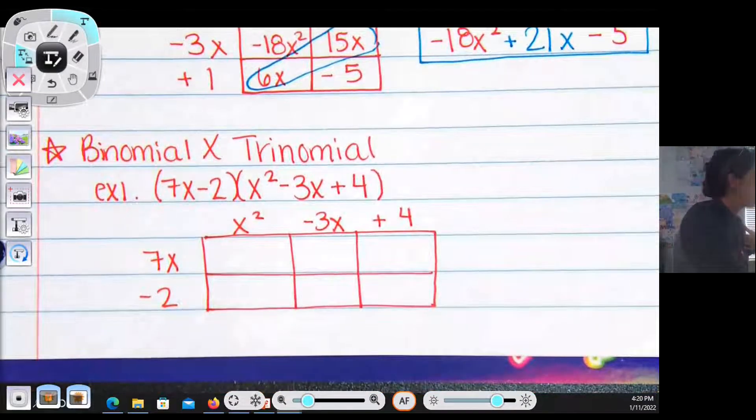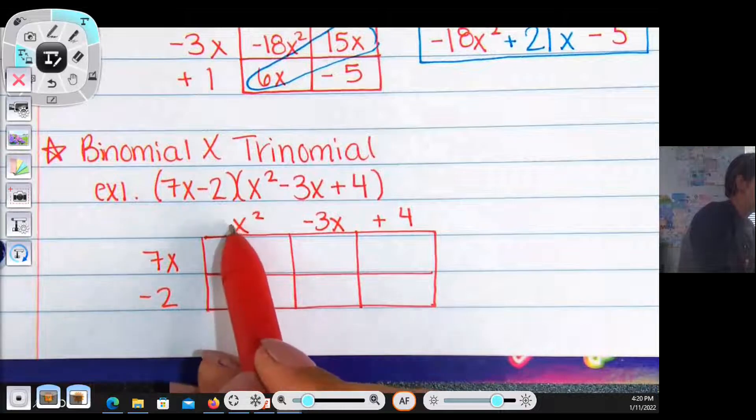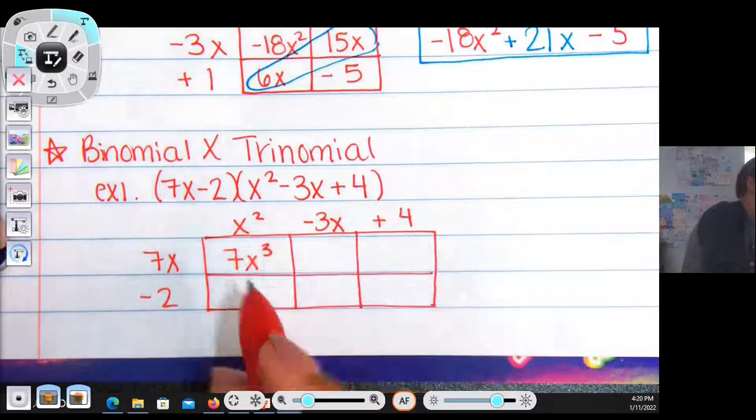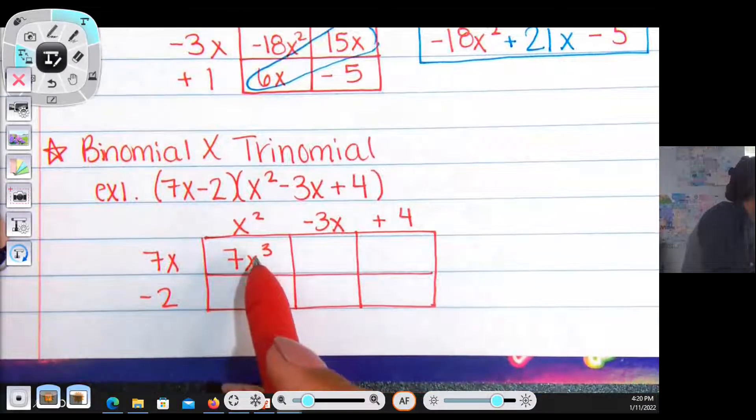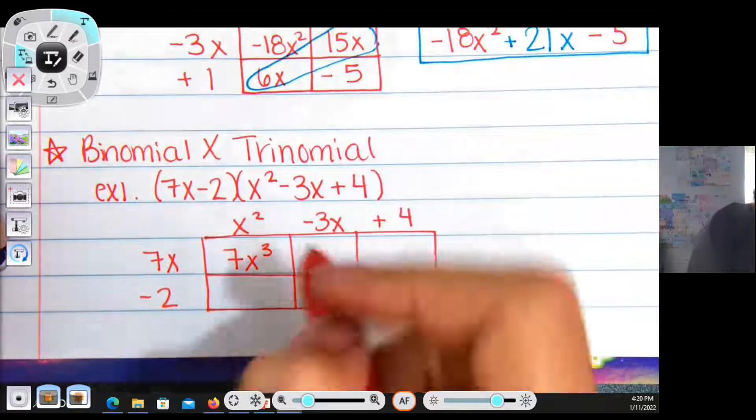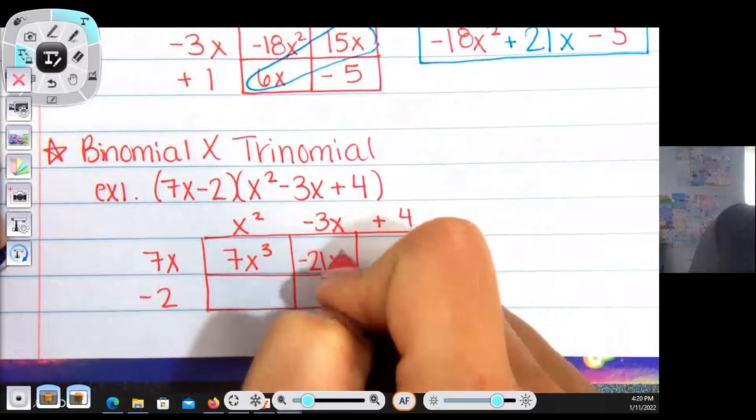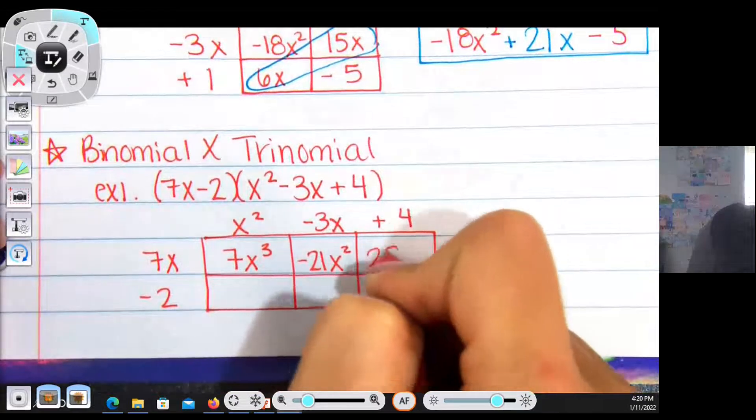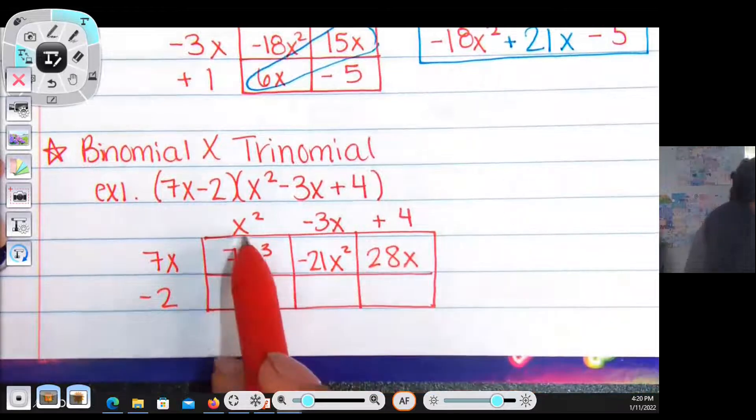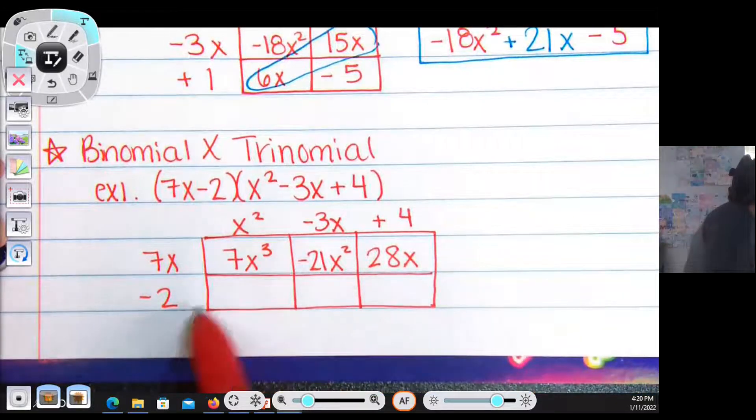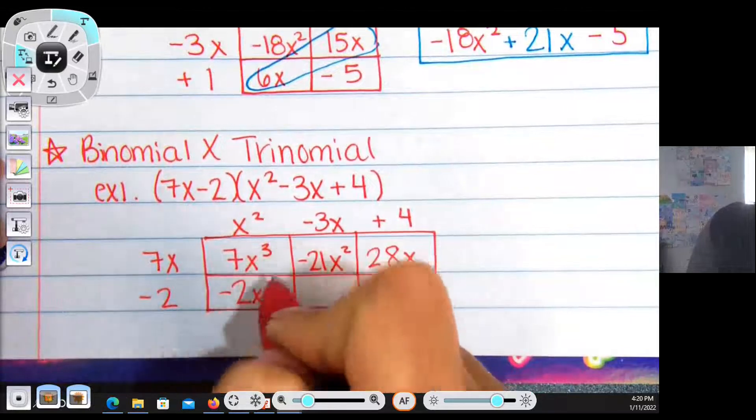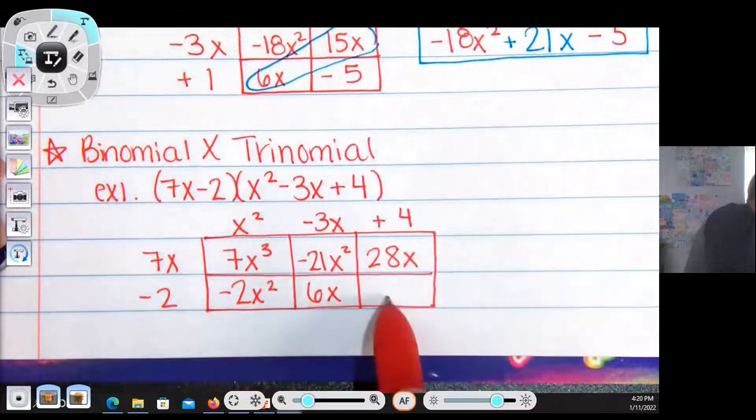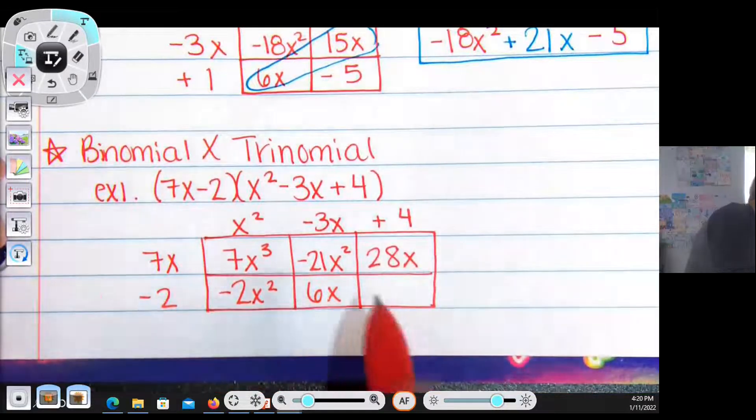I'm going to put my binomial on the side and my trinomial along the top. Now I'm going to multiply to make the inside of the box. 7x multiplied by 1x² is going to give me 7x³, because now I have 2x's up top and an x on the side, so I have a total of 3x's. 7x multiplied by negative 3x is going to give me negative 21x². 7x times 4 is going to give me 28x. x² multiplied by negative 2 is negative 2x². Negative 2 multiplied by negative 3x is positive 6x. Negative 2 multiplied by positive 4 is negative 8.